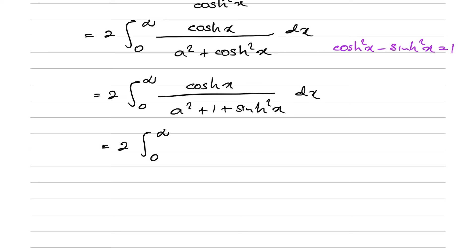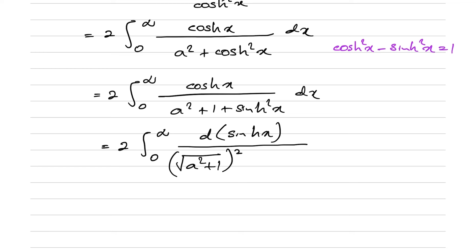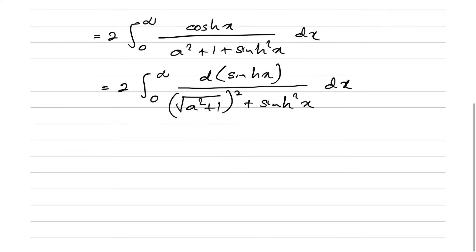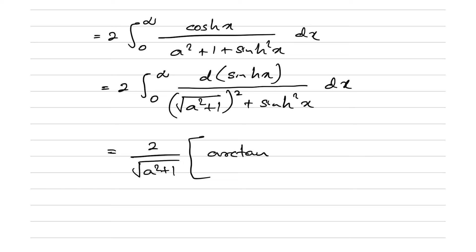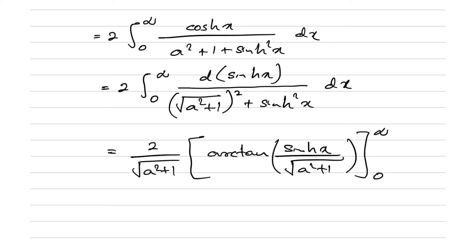This becomes two times the integral from zero to infinity of d(sinh(x)) over ((a²+1) + sinh²(x)). This is a standard arctan form, giving 2 over sqrt(a²+1) times arctan(sinh(x) / sqrt(a²+1)), evaluated from zero to infinity. Applying the limits: arctan(∞) = π/2 and the term at zero vanishes.